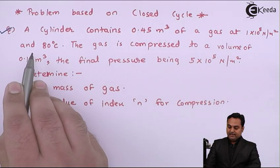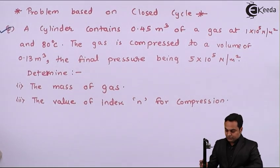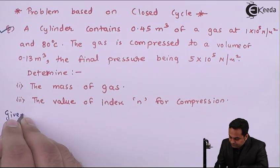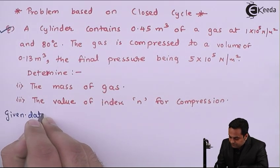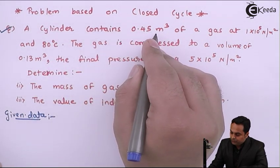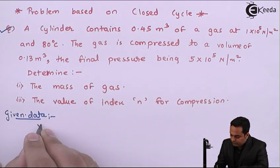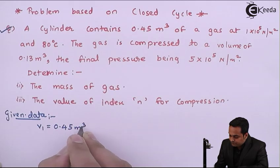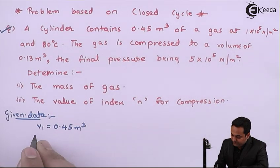and 80 degrees Celsius. So here I'll write the data for this. It is given that a cylinder contains 0.45 meter cube of gas, so the volume is given at 1×10^5